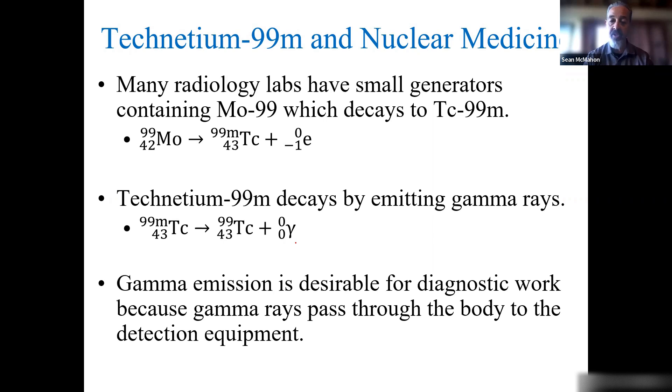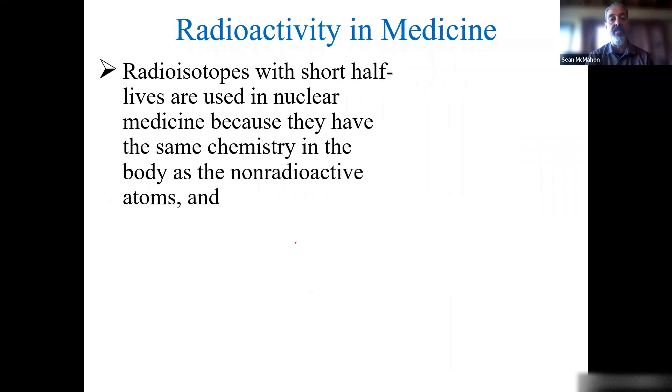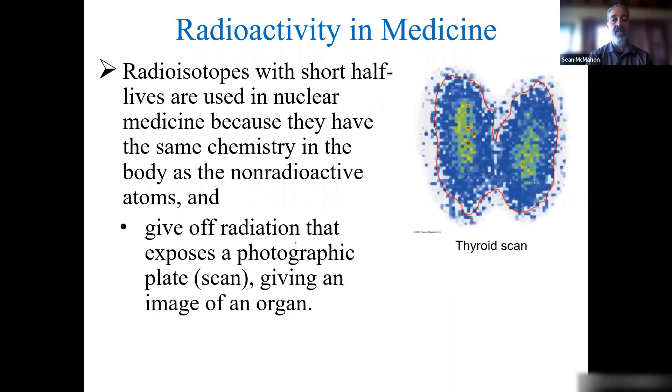Gamma emission is desirable for diagnostic work because gamma rays can pass through the body to the detection equipment for scans. Radioisotopes have short half-lives and are used in nuclear medicine because they have the same chemistry in the body as non-radioactive atoms. They give off radiation that exposes photographic plates, films, or what we call scans, to give an image of an organ. Here's a thyroid scan.